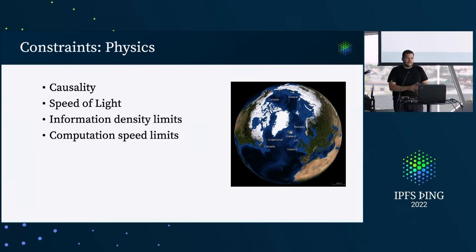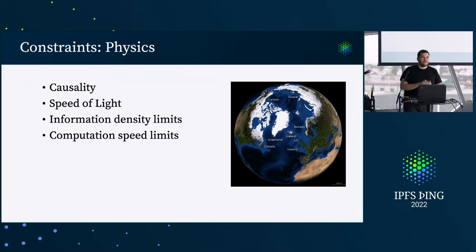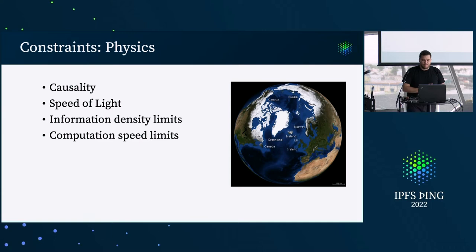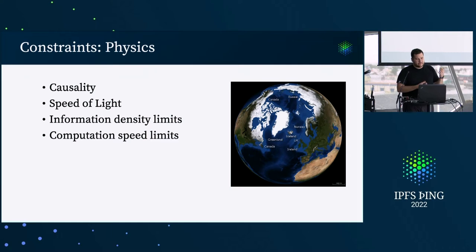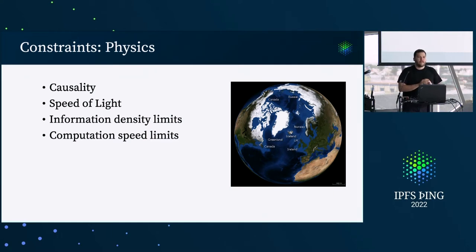Let's start at the beginning. At the end of the day, there are some very difficult constraints we're dealing with and everything else comes out of that. First one is causality — we can't violate causality, at least we haven't figured out how. That means we're bounded by the speed of light in sending messages, and that's about the hardest constraint. Almost everything we do has to deal with this. The other constraints physics gives us — information density limits and computational speed — we're so far away from those physical constraints that they aren't problems.